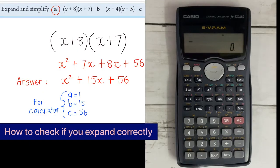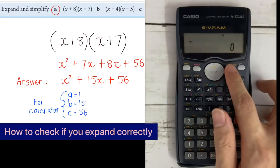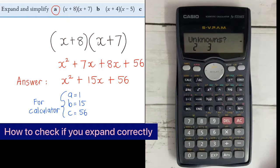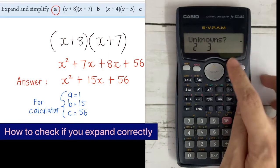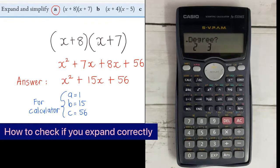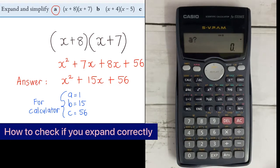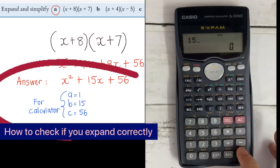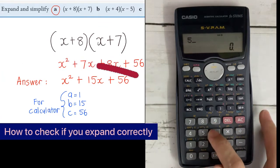To check the answer for expanding double brackets using the first calculator, click on mode 3 times. You'll be heading to equation number 1, so press 1. Now you'll be prompted for the unknowns 2 or 3 — don't go to 2 or 3. Instead, there's a right arrow; click on it. So now our x is degree 2, so key in 2. Whatever is in front of x squared is value A — in this case it's 1, so press 1 equal. Whatever is in front of x is B — that's 15, so key in 15 equal. The number alone is value C — that's 56, so key in 56 equal.